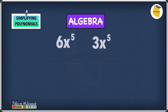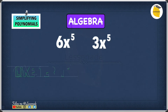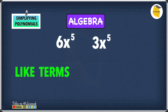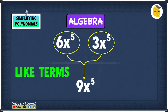Let's have a look at another example. We have 6x raised to the power of 5 and 3x raised to the power of 5. As you can see, we have x raised to the power of 5 as both variable parts, and we know that x⁵ is the same. Therefore, these are like terms, and we can combine them to give us 9x raised to the power of 5.